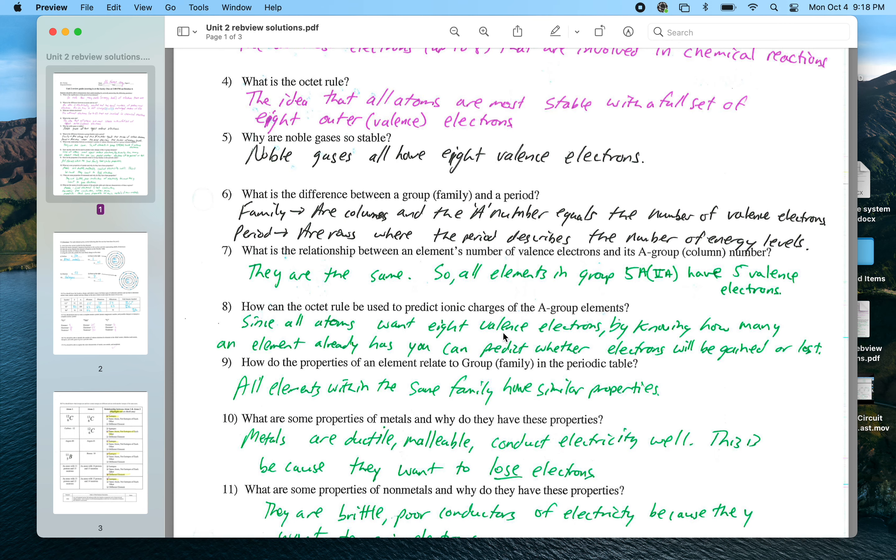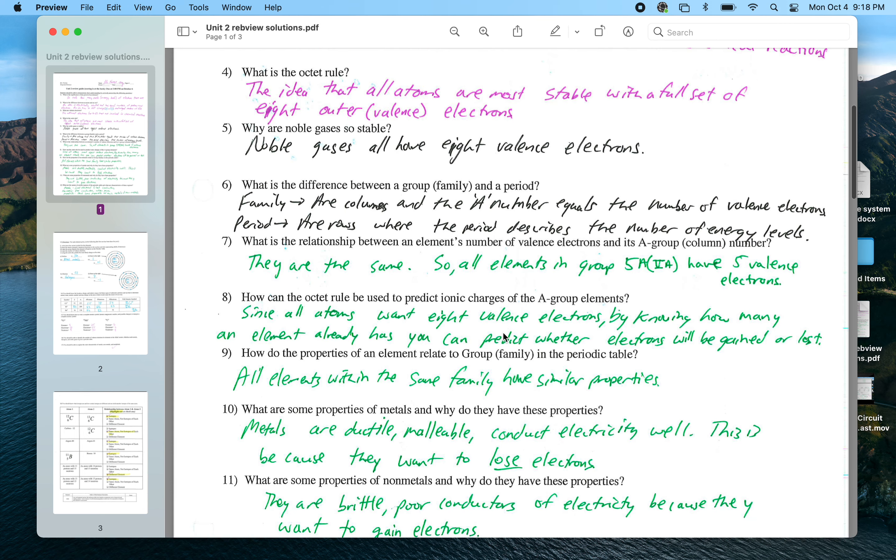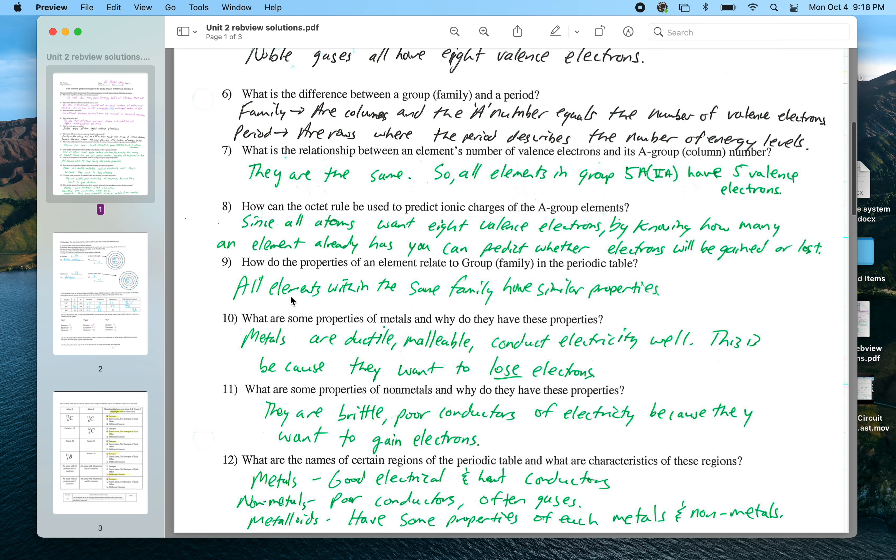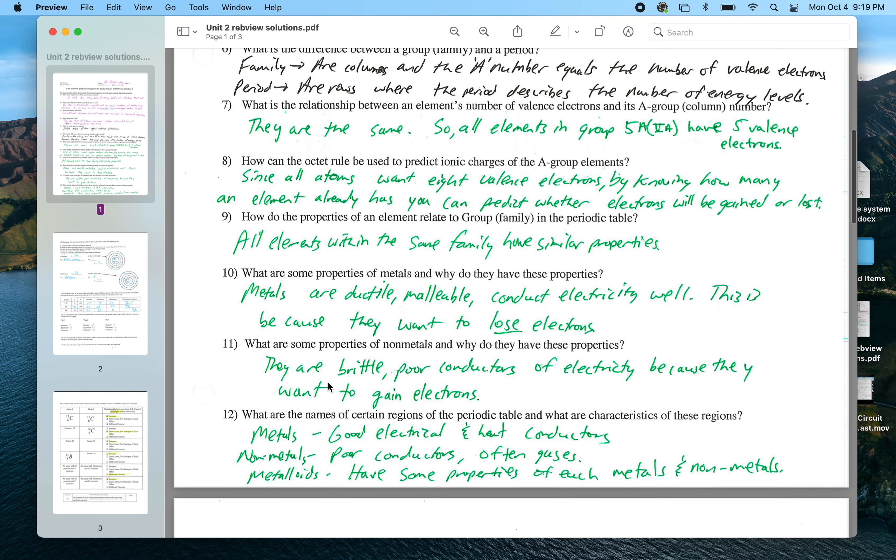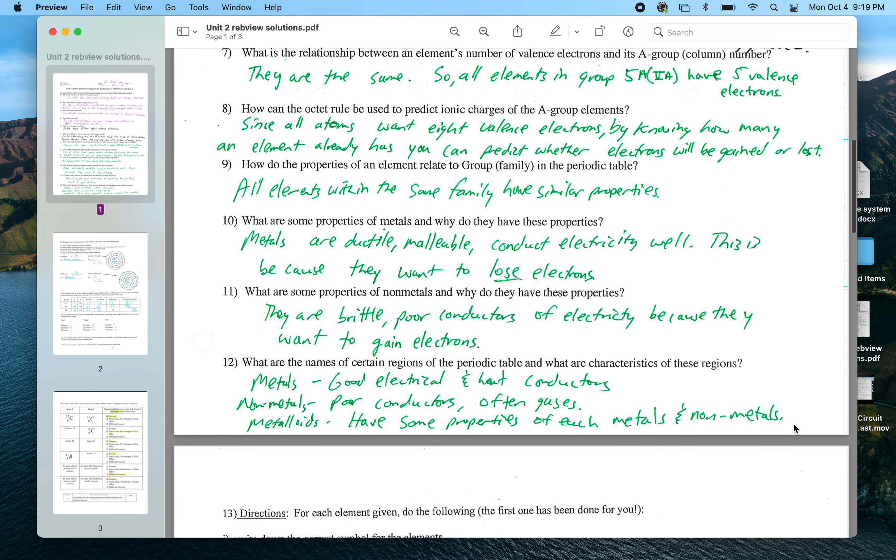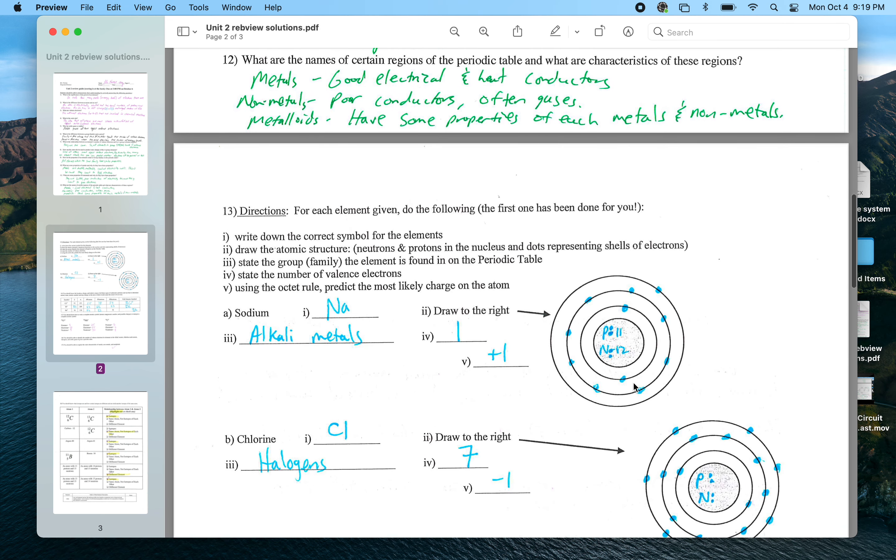How do properties in an element relate to the group? All elements within the same family or group have similar properties because they have the same number of valence electrons. Properties of metals: they tend to be ductile, malleable, conduct electricity well. Some of them tend to have high melting points - not all of them, but the ones on the left side tend to do that. They also conduct electricity very well and heat very well, and that's because they want to lose electrons and you're on the left side of the periodic table. Properties of nonmetals: they're on the right side of the periodic table, they do not conduct electricity or heat very well, they tend to be brittle, and they tend to want to gain electrons. Metalloids' properties are somewhere in the middle of those two.